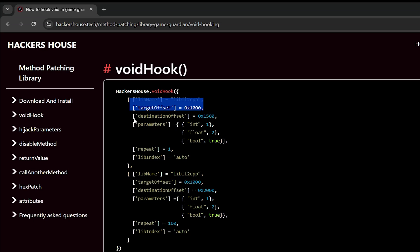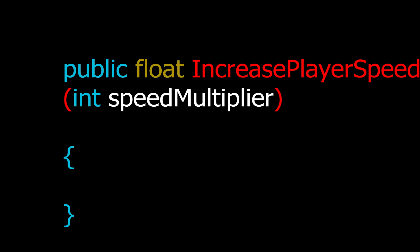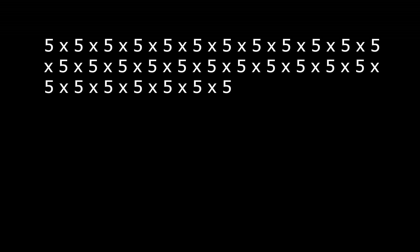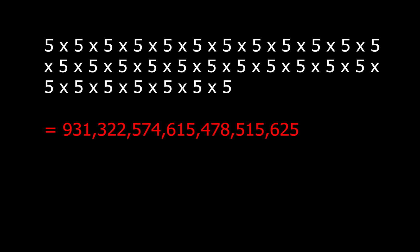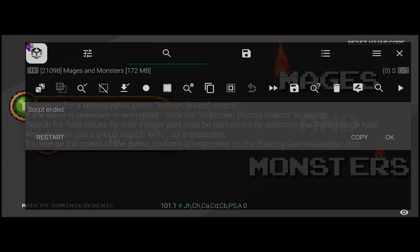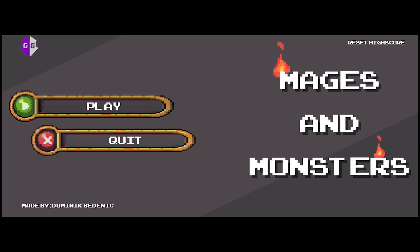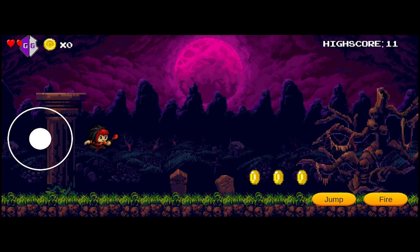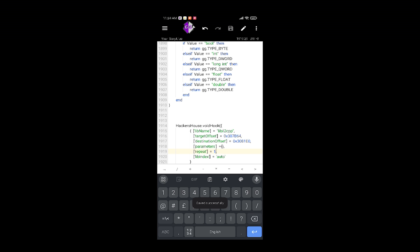However, you might not want to call the destination method many times. For example, if there is a method called IncreasePlayerSpeed and you hook it to get 5x speed, it might get called 30 times a second — meaning the speed multiplier runs 30 times per second, which will crash or freeze your game. Using repeat count, change it from infinite to 1, and now the player gets 5x speed applied only once without crashing. Similarly, a jump method hooked with infinite repeat causes the player to keep jumping, but with repeat count 1 the player jumps once and stops.